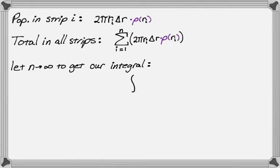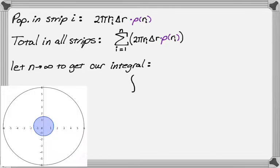We need to figure out the R values for our bounds. The lake goes from 0 to 1.5, the city goes from 1.5 to 6. So our bounds are 1.5 out to 6. Then it's 2 pi. When we take the limit, r sub i gets replaced by r, delta R becomes dr, and rho of r sub i becomes rho of r.